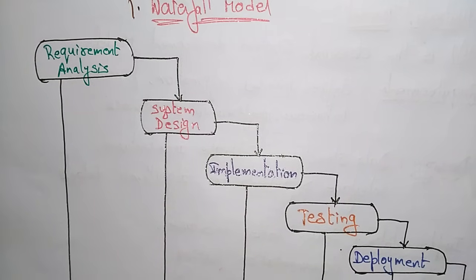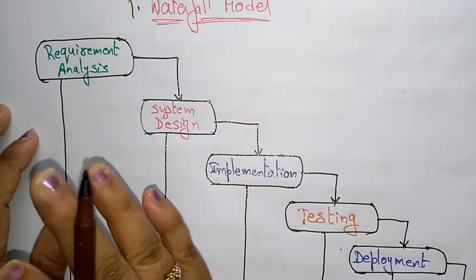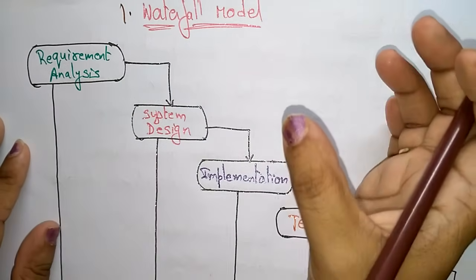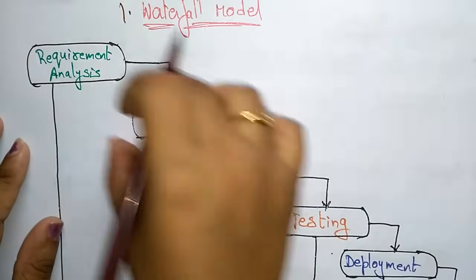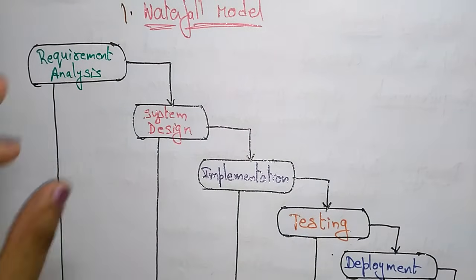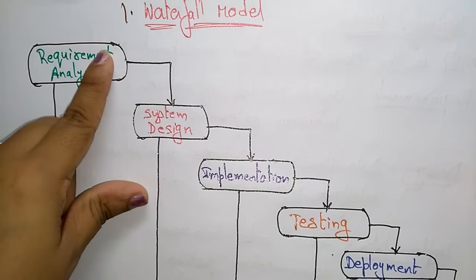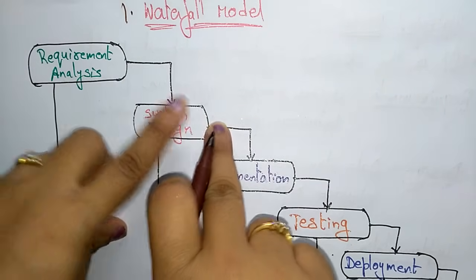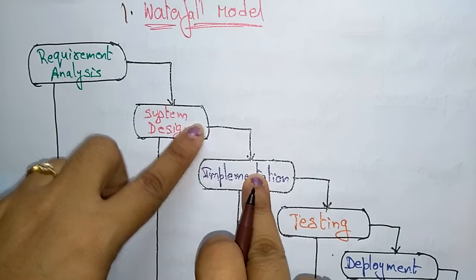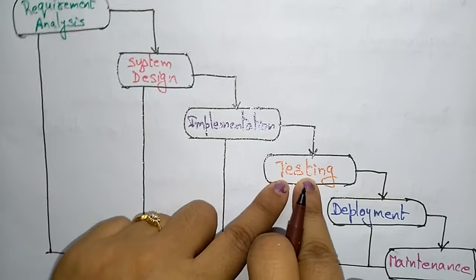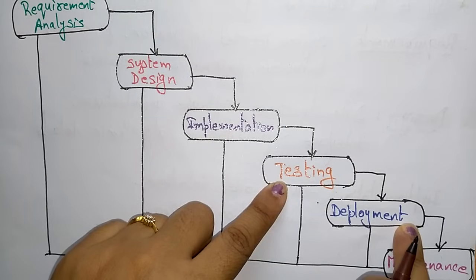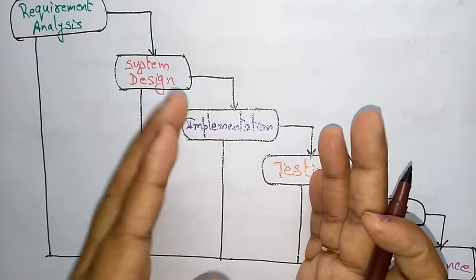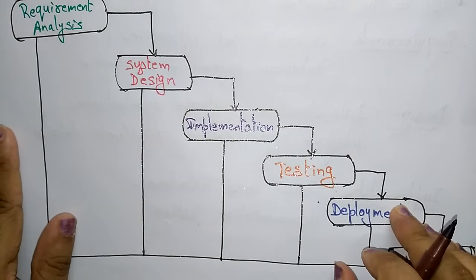In this approach, the whole process of software development is divided into separate phases. If any problem is there, that problem is divided into a series of different phases. The outcome of one phase acts as input to the next phase — the outcome of requirement analysis is input to system design, system design to implementation, implementation to testing, testing to deployment, and deployment to maintenance. This must be done sequentially.